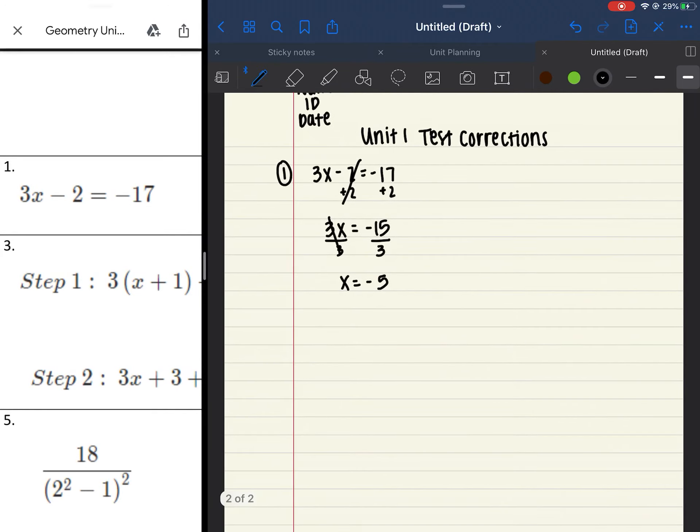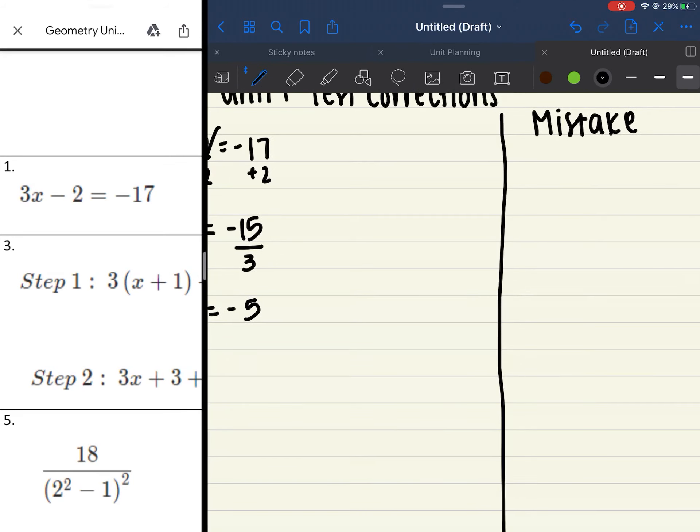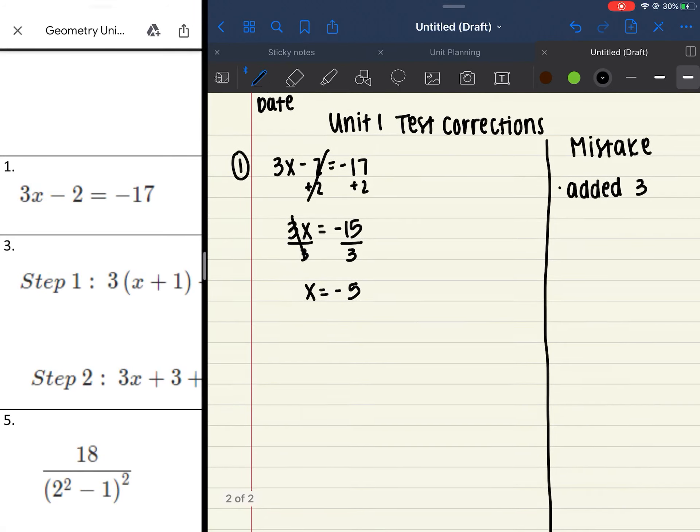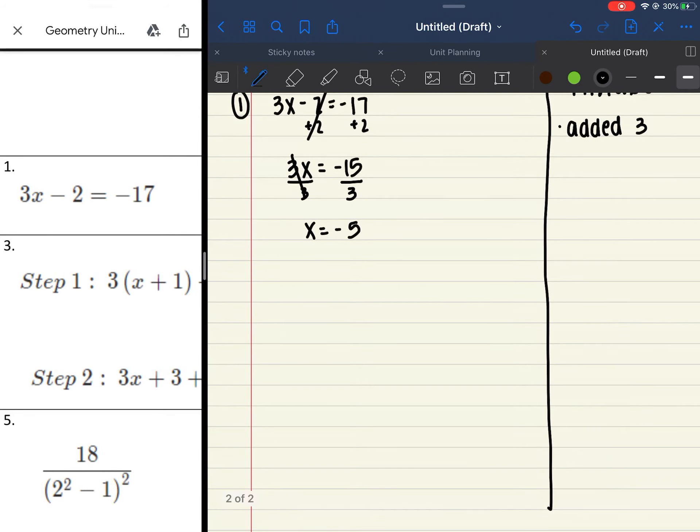So then you would come over here, if you want to draw a line, you can, and you're going to tell me where your mistake was or where you think your mistake was. So maybe you added 3, so you're going to put here that instead of dividing by 3, I added 3. And you're going to do that for every single problem. If you don't know if you missed it or not, maybe put where you think it was tricky, something along those lines.